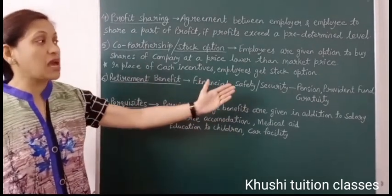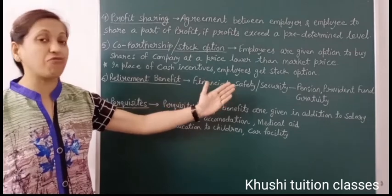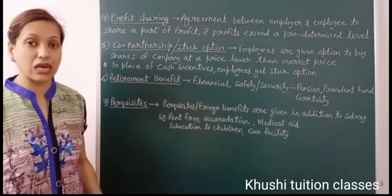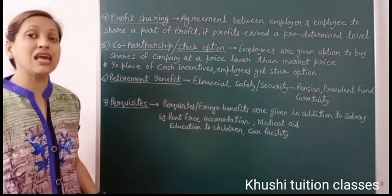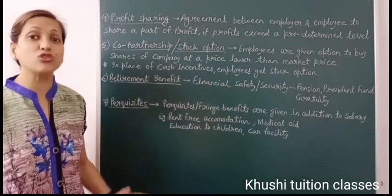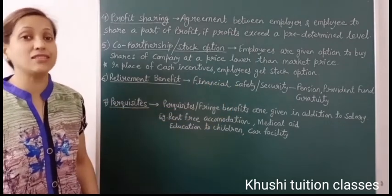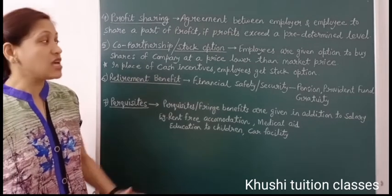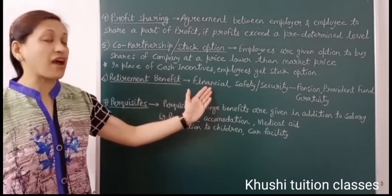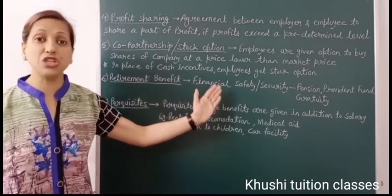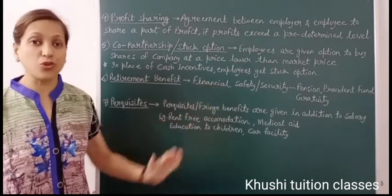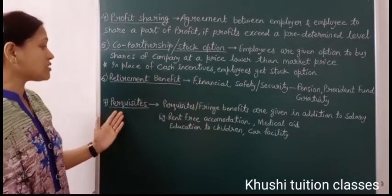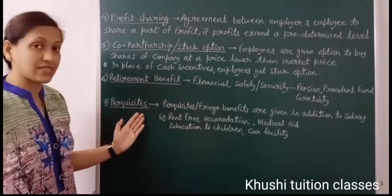they receive the pension amount, provident fund, and gratuity amount. Therefore, individuals prefer to work in organizations that provide this financial safety. The seventh financial incentive is perquisites.